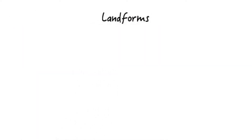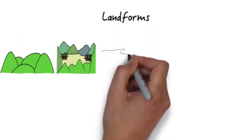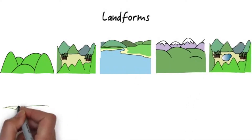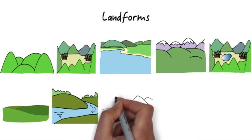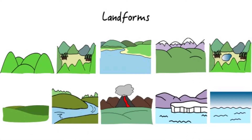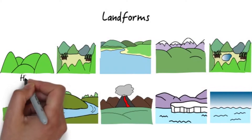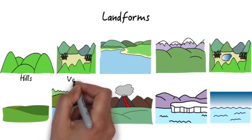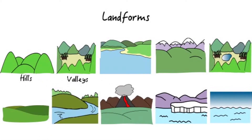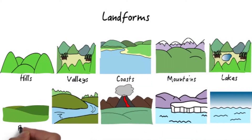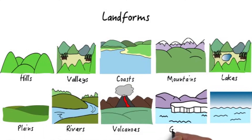Landforms are irregularities in the terrain found within Earth's crust. They come in all shapes and sizes. Some examples of landforms are hills, valleys, coasts, mountains, lakes, plains, rivers, volcanoes, glaciers, and oceans.